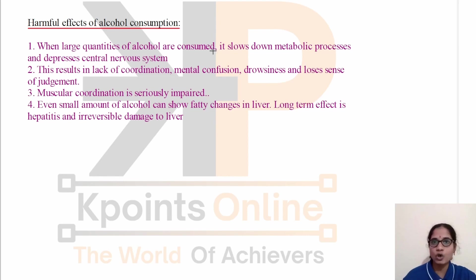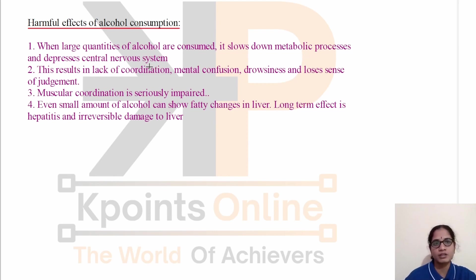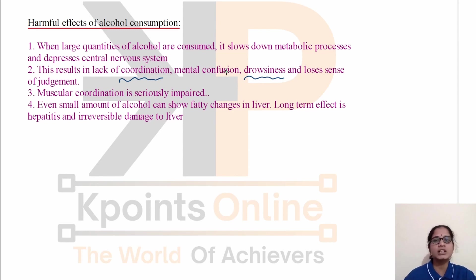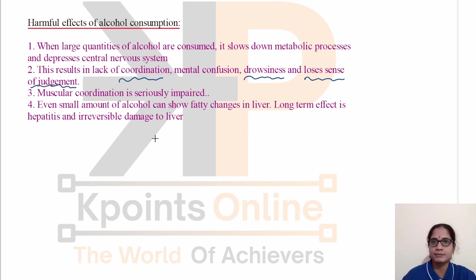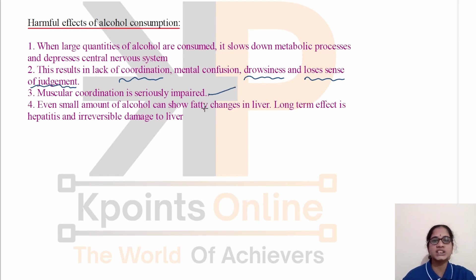When large quantities of alcohol are consumed, it slows down metabolic processes and depresses the central nervous system. This causes lack of coordination, mental confusion, and drowsiness. The person loses their sense of judgment and cannot coordinate properly. Muscular coordination is seriously impaired. Even small amounts of alcohol can show fatty changes in the liver.